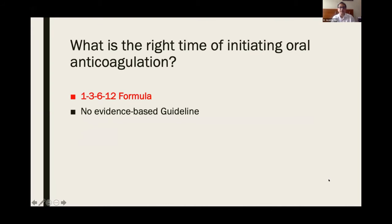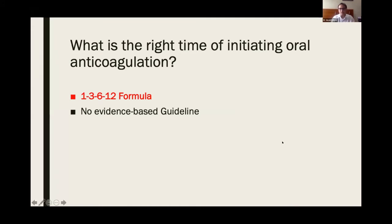The right time to initiate oral anticoagulation is the most debatable issue. We are all aware of the 1-3-6-12 formula from the European guideline — not based on any evidence, but mostly expert opinion: TIA day 1, minor stroke day 3, moderate stroke day 6, big stroke day 12. But those have to be bland infarcts, not hemorrhagic. If there is hemorrhagic transformation, then we have to delay initiation. This is standard practice — we all tend to do that — but it's not so simple.